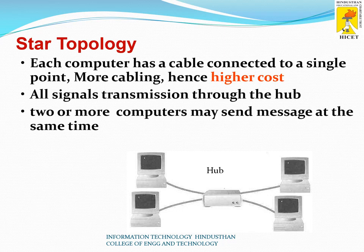Star topology needs more cabling, so the cost is higher than bus topology. All signal transmissions go through the hub only — if a machine wants to communicate with another machine, it communicates through the hub. One advantage over bus topology is that two or more computers may send messages at the same time.